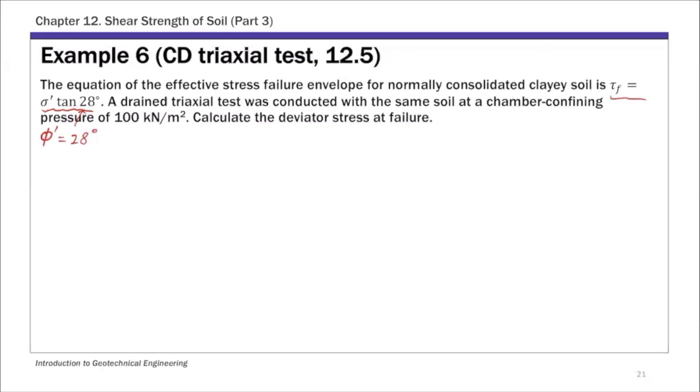And this is for a normally consolidated clay. Again, we know C' is approximately zero. So for this example, it's zero. And this is during the triaxial test, same soil, on the same soil with chamber confining pressure. So this chamber confining pressure is what we call σ3. Since this is a drained triaxial test, σ3 and σ3' is the same. So that's your chamber confining pressure.